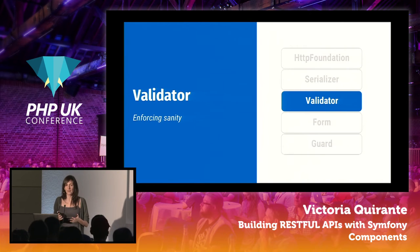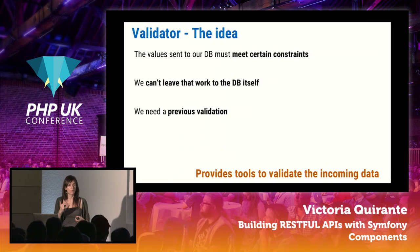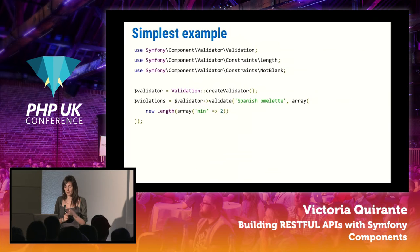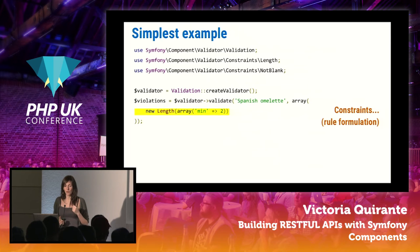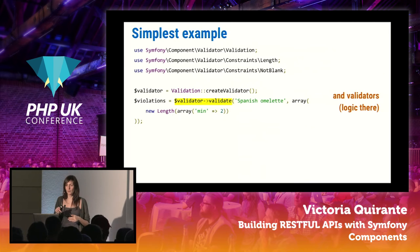Validator is our third best friend, because we have to make sure that whatever goes to our database meets some constraints — we cannot leave that work to the database. The Validator component provides tools for this. There are two things: constraints, which are the rule formulations where you declare what you want; and validators, where the actual logic resides. If you need to write your own constraints and validators, you put your logic in there.